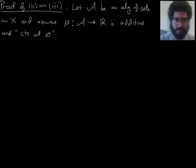So, same global assumptions as before. A is an algebra of sets on X, μ is an additive function. But now I'm going to assume 2, which is that μ is continuous at the empty set.